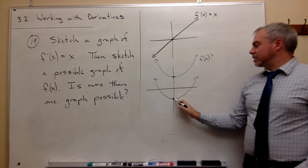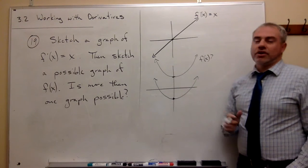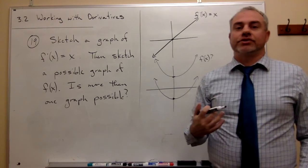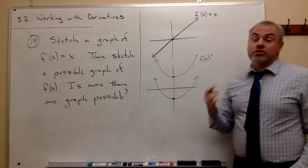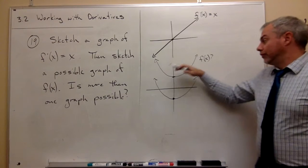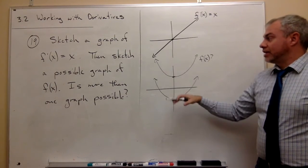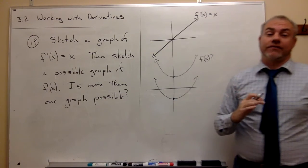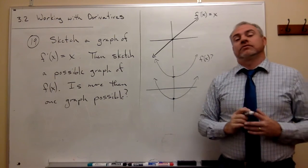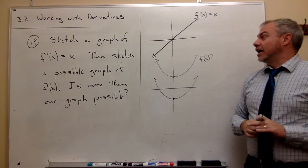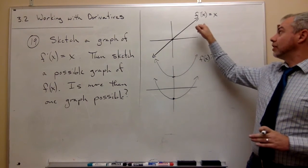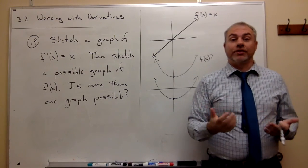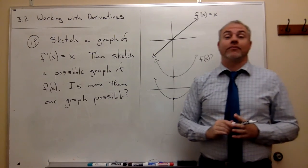So the point at which I start is not determined. So I could get a lot of different graphs for the function f of x, not just one. I could move this up and down anywhere I wanted to. The graph would look the same, it just would be in a different position vertically. So we have a sketch of f prime of x, we have a sketch of f of x, and we know that there is certainly more than one graph possible.